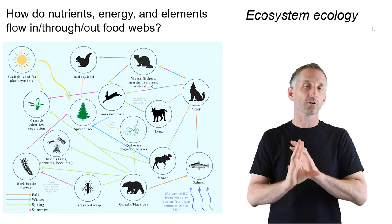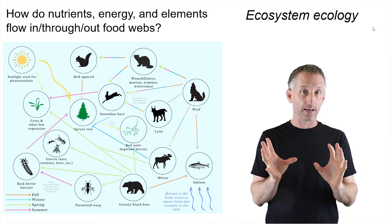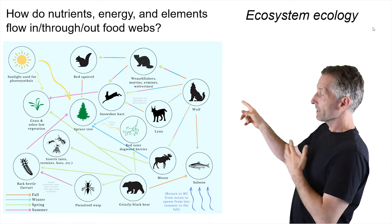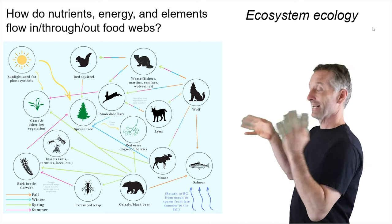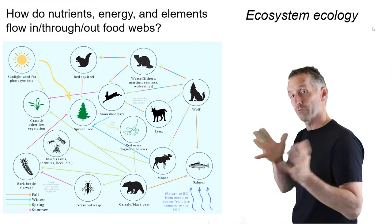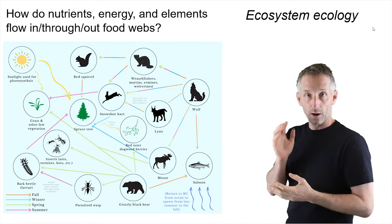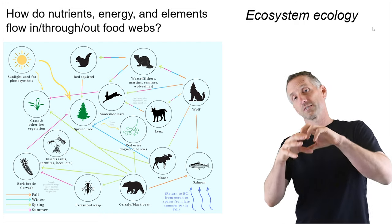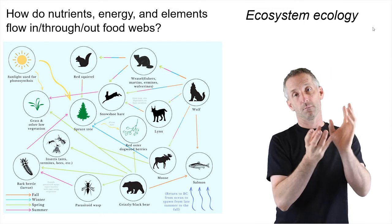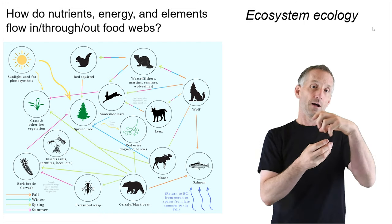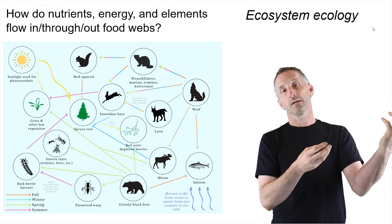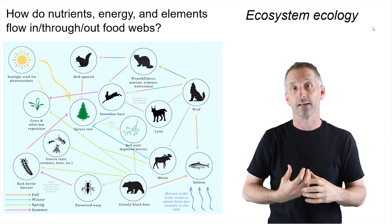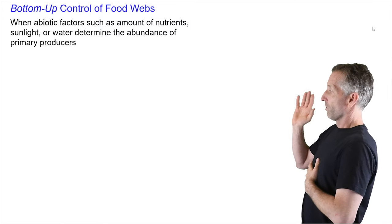Let's zoom back out, look at the whole thing again, and in particular think about the flow of nutrients, energy, and elements into, through, and then out of food webs. This is the realm of ecosystem ecology, where you consider not just the set of organisms and how things move around among them, but how they move from abiotic components into the system, and then out of the system back into the abiotic components.